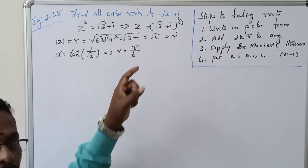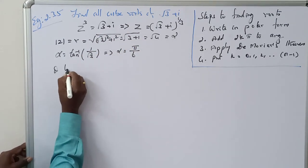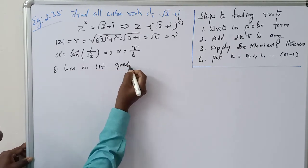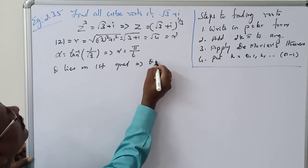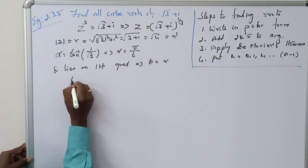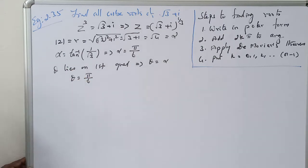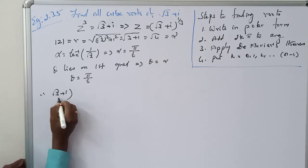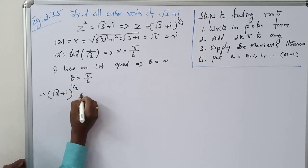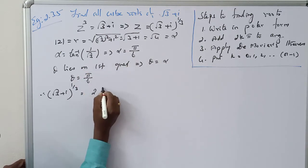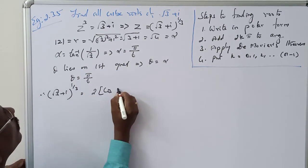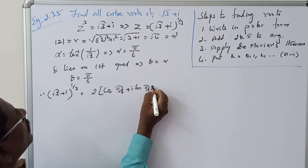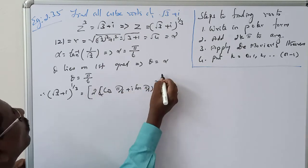Both parts are positive, meaning it is in the first quadrant. Therefore theta equals alpha, so theta equals π/6. Therefore the polar form: (√3 + i)^(1/3) equals [2(cos(5π/6) + i·sin(5π/6))]^(1/3).